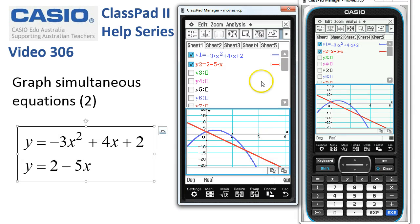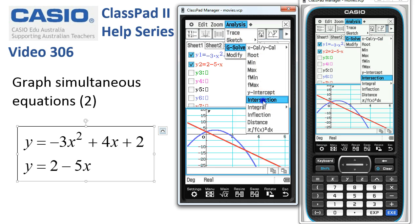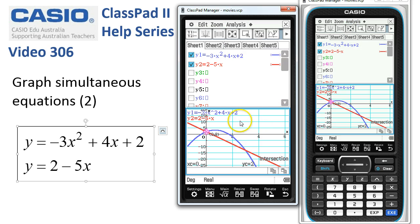Now to get the exact points of intersection, we can use the analysis solve intersection function. And the first point is here at 0,2.